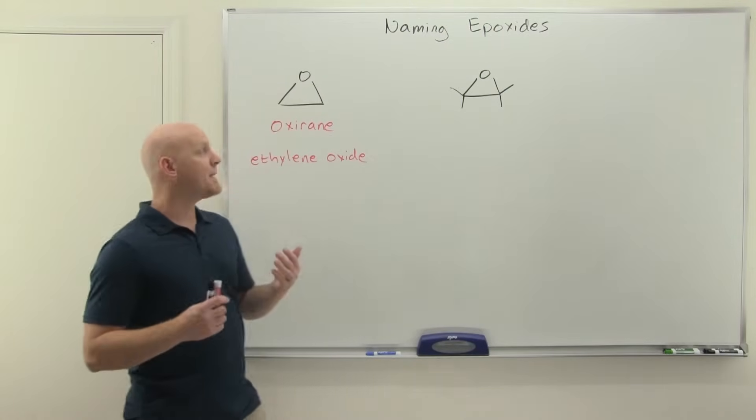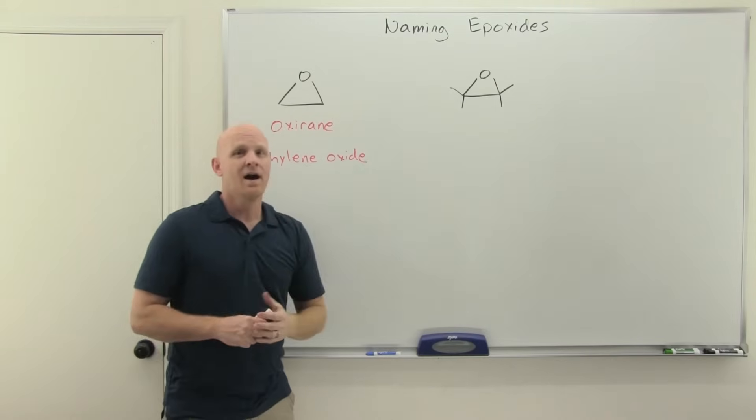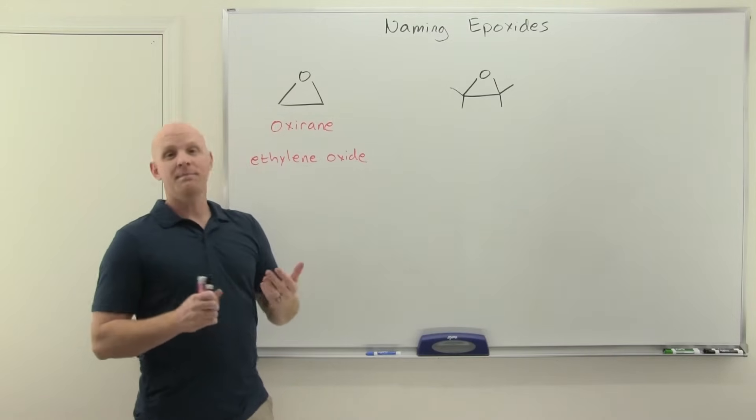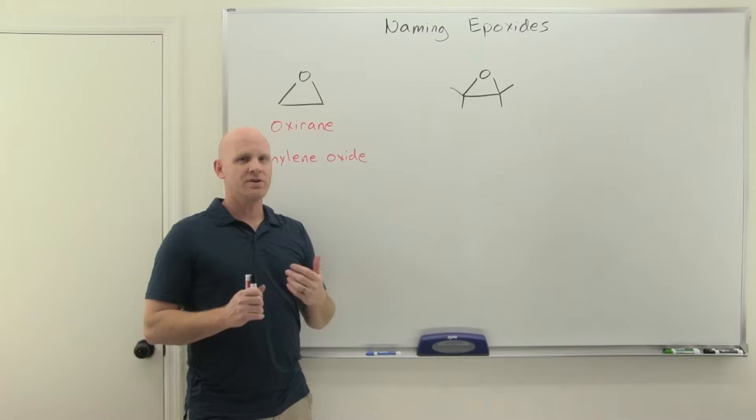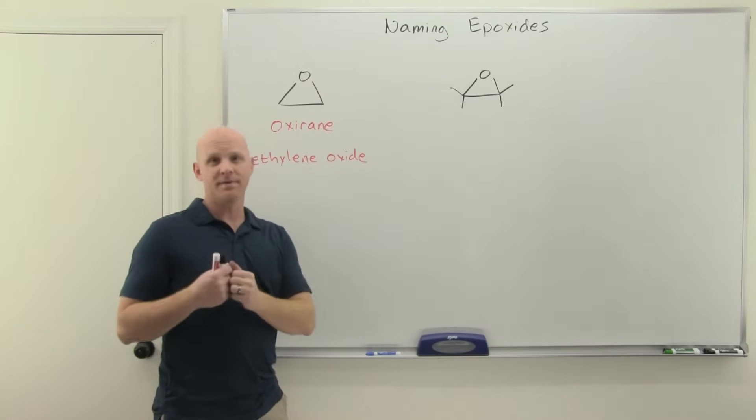All right, so first of all, an epoxide: a three-membered ring with oxygen in it. We learned how to make them way back in the alkene chapter. You can take an alkene and use a peroxy acid like MCPBA to make them.